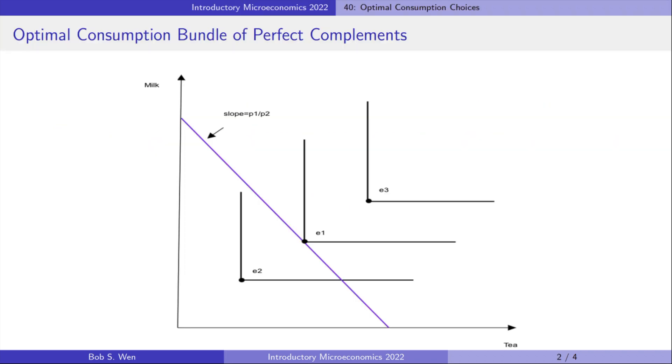As shown in the graph, the consumer's indifference curves for tea and milk are right angles. Suppose that the consumer loves milk tea and she makes the milk tea with a cup of tea and a glass of milk.